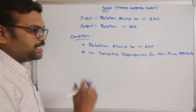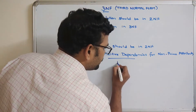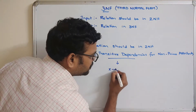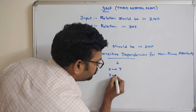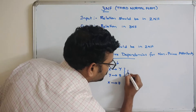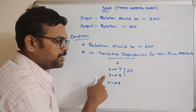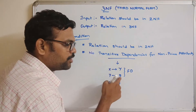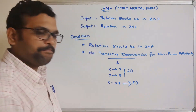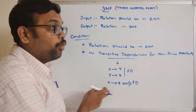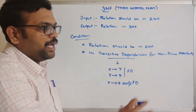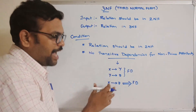I will explain at a glance what is a transitive dependency. Transitive dependency means, for example, if you have functional dependencies like X → Y and Y → Z, then automatically X → Z is also a functional dependency. We have to avoid such things only for the non-prime attributes, not for all attributes. We have to search whether any non-prime attribute has this transitive dependency.